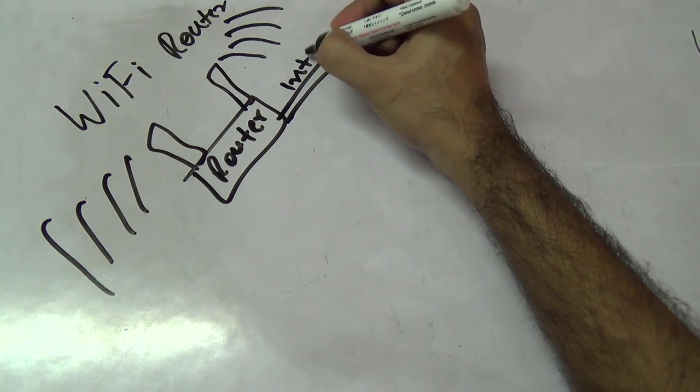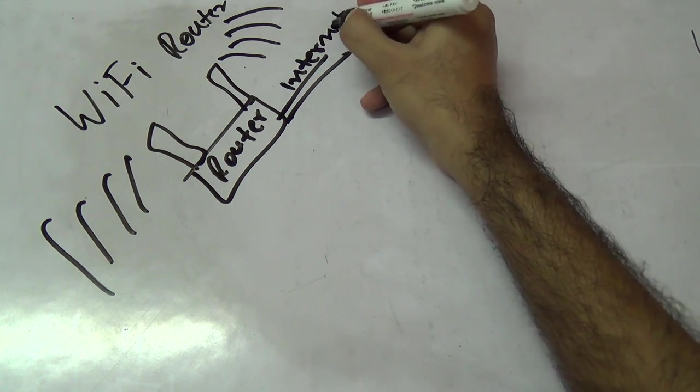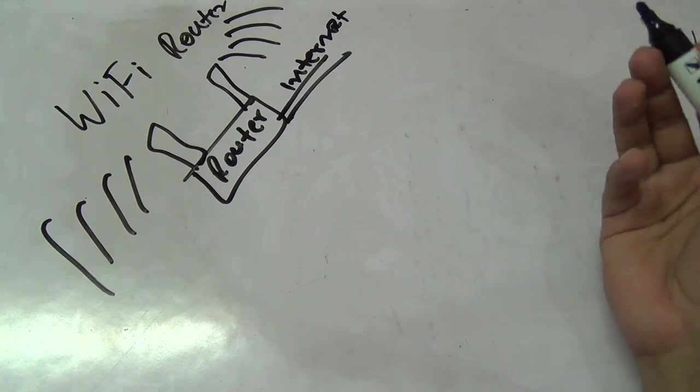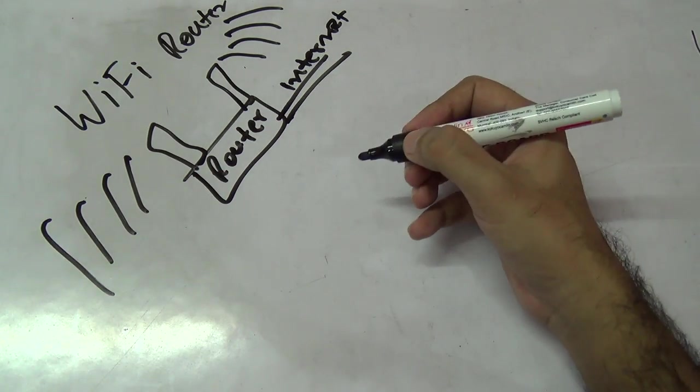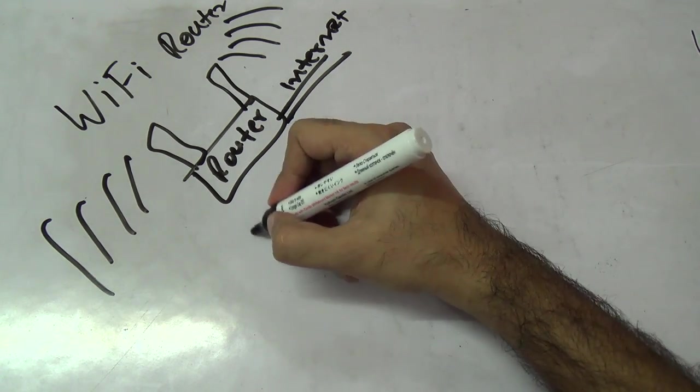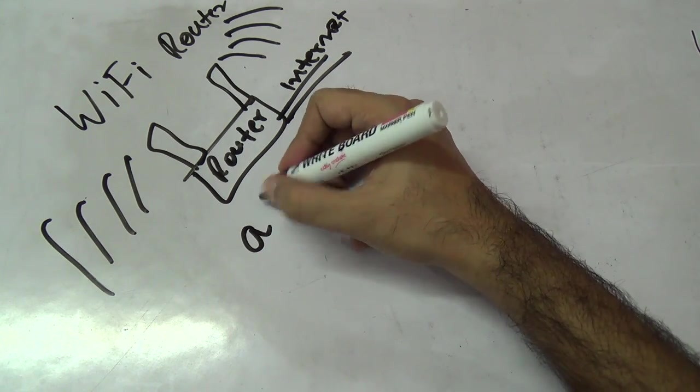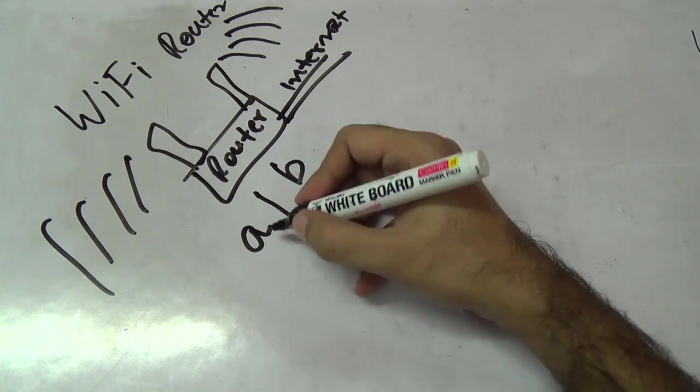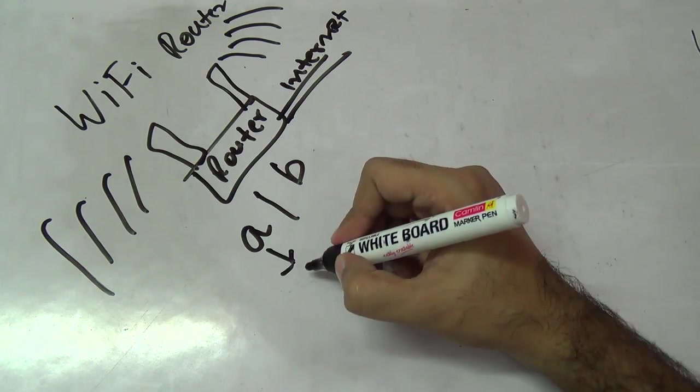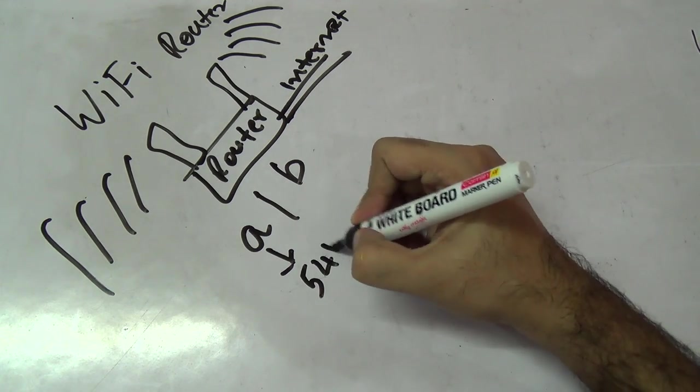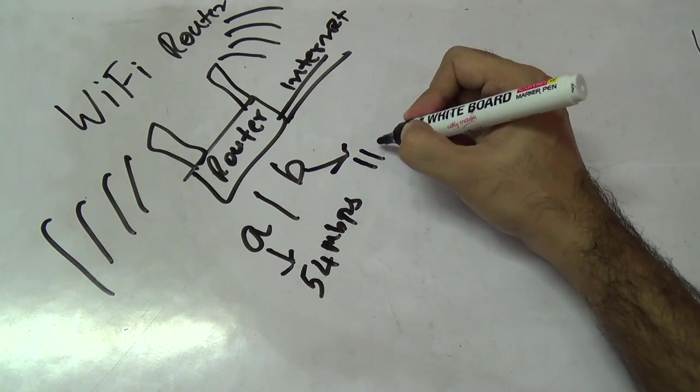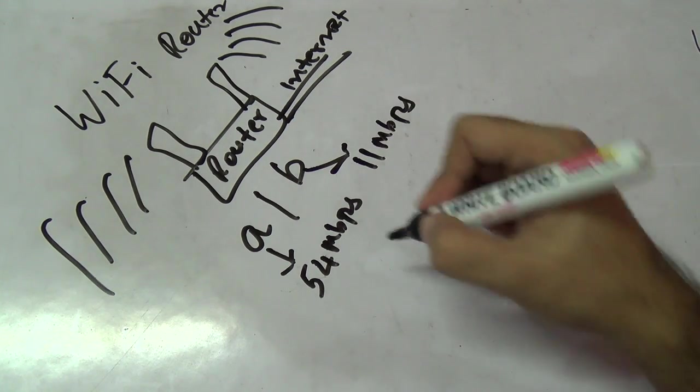Now many people are confused about these a, b, g, n standards. You do get Wi-Fi routers with these different standards. The earliest ones were a and b, but these days you don't get them.